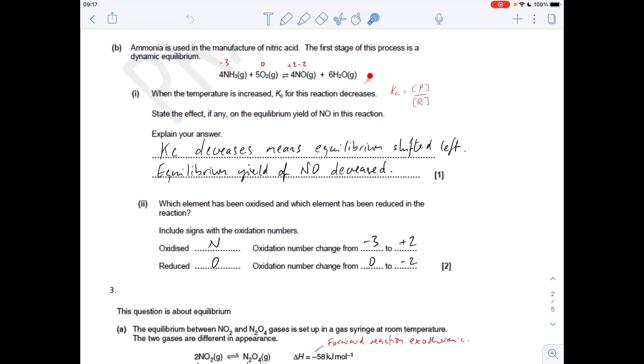Okay, so the next question is about this equilibrium here. We're told that when the temperature was increased, Kc actually decreased. State the effect, if any, on the equilibrium yield of NO in this reaction. If Kc has decreased, it means the equilibrium must have shifted to the left. If the equilibrium has moved to the left, then the concentration of the NO has decreased.